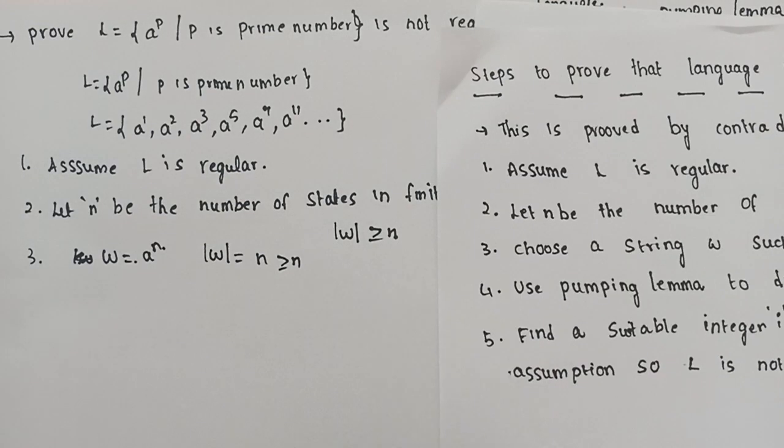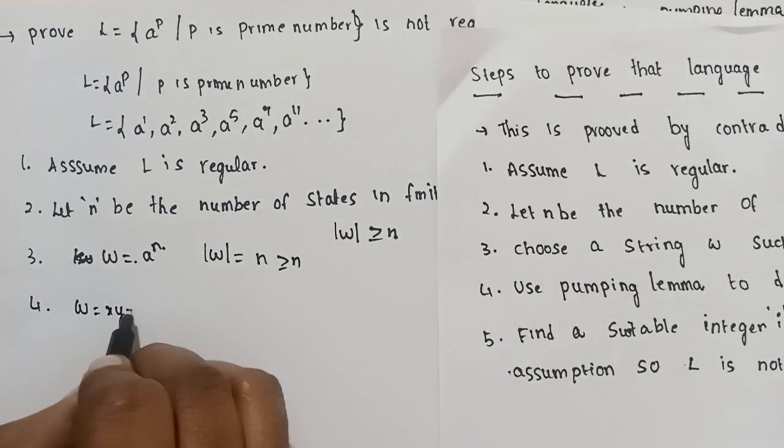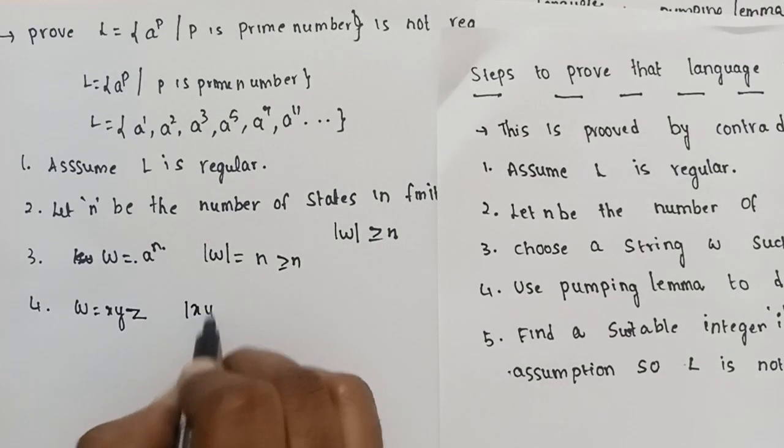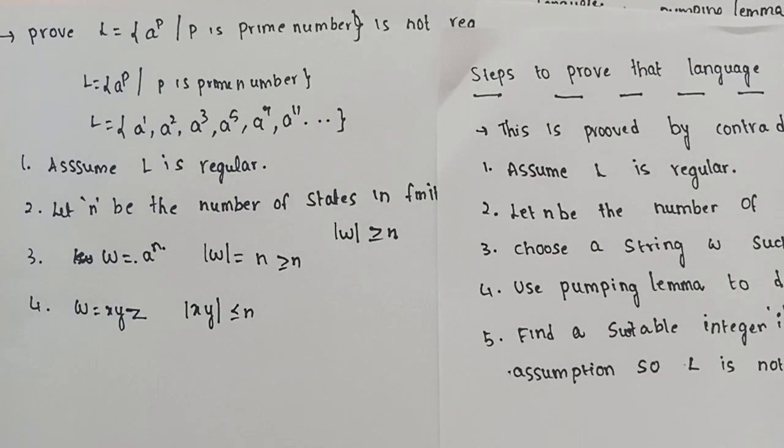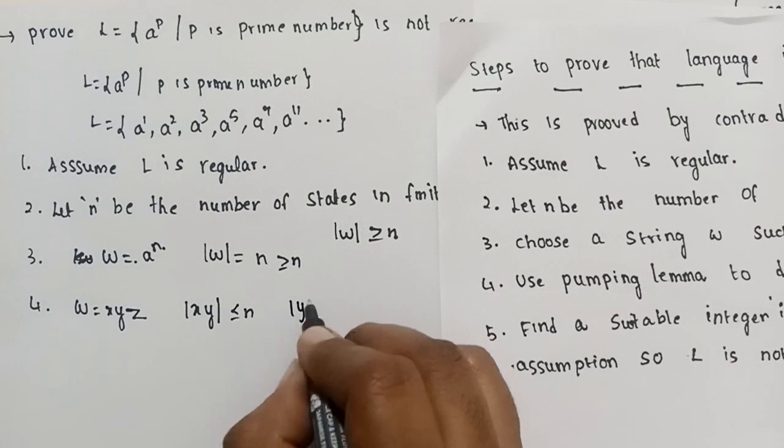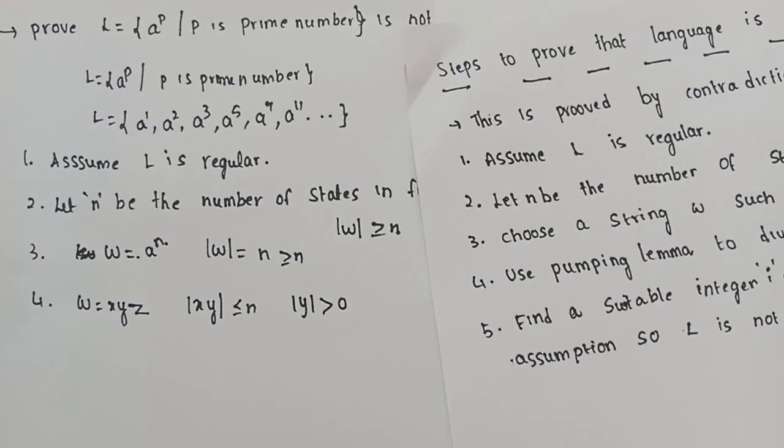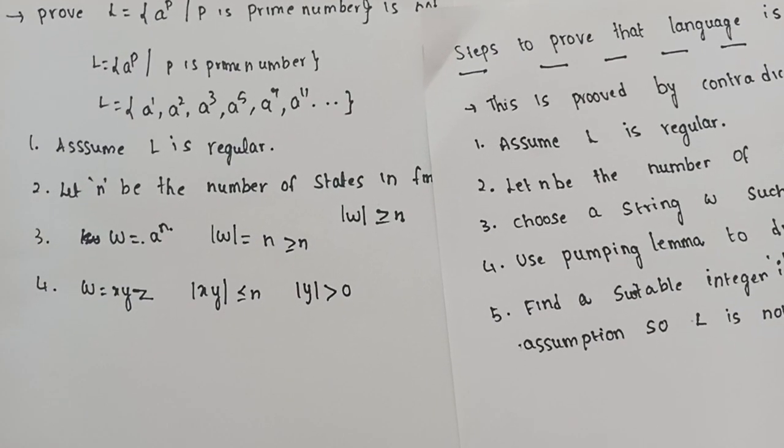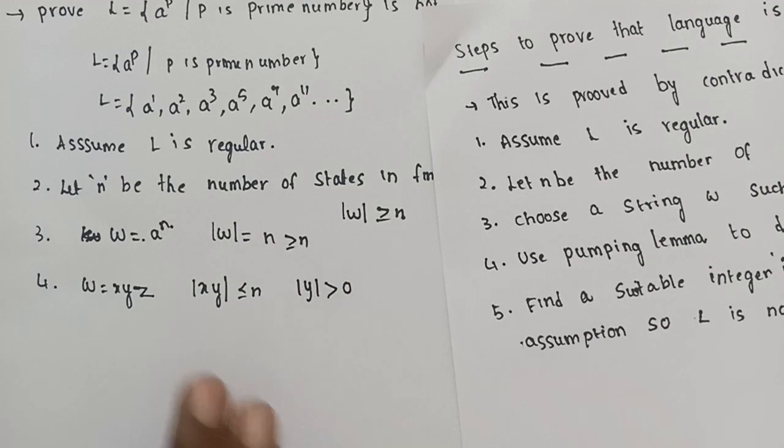The string is divided into xyz satisfying these conditions: mod xy is less than or equal to n and mod y is greater than 0.